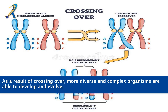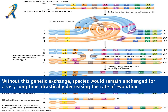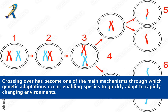As a result of crossing over, more diverse and complex organisms are able to develop and evolve. Without this genetic exchange, species would remain unchanged for a very long time, drastically decreasing the rate of evolution. Crossing over has become one of the main mechanisms through which genetic adaptations occur, enabling species to quickly adapt to rapidly changing environments.